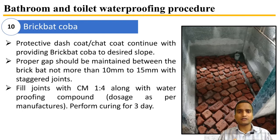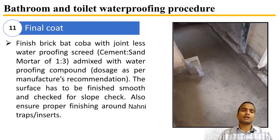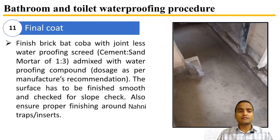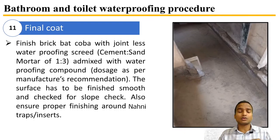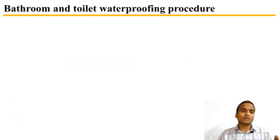The slope is considered as 1:200 from the entrance door to the trap points for evacuating water to external drainage pipes. The final coating over the brick bat coba is a jointless waterproofing screed: cement-sand mortar in a ratio of 1:3 admixed with waterproofing compound, finished smooth and checked for slope. Proper finishing must be ensured around the nahni traps or inserts to prevent water accumulation around them.